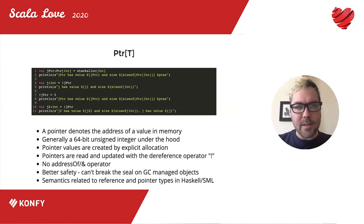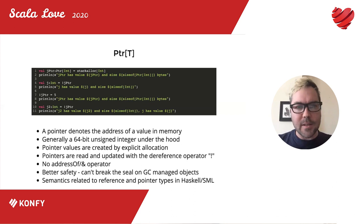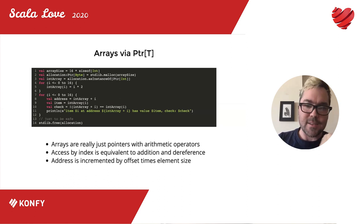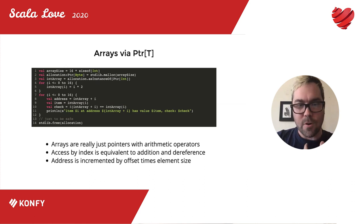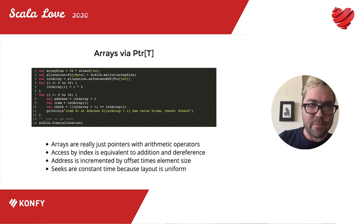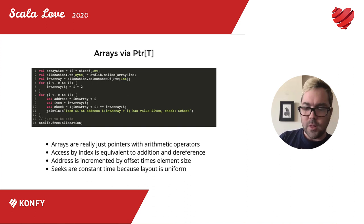If you're a Haskell or SML person, it's very close to the semantics of the ML ref or Haskell's internal pointer type. Pointers also are arrays — they can be a container for zero or more values in contiguous storage. Because the size of each value in that chunk of memory is known, you can compute the offset statically in constant time — a better performance characteristic for random seek than just about any higher-level data structure. If you look at my Scala Days talk from two years ago, I go really deep into exactly how this can outperform traditional higher-level data structures for certain kinds of tasks.